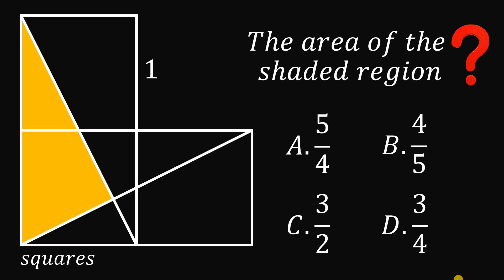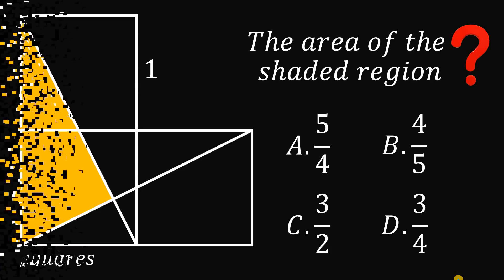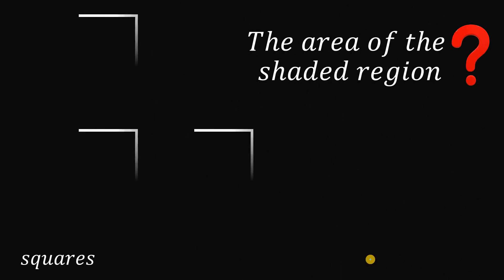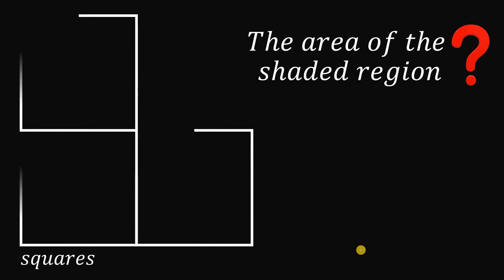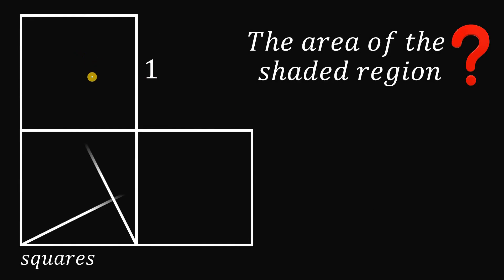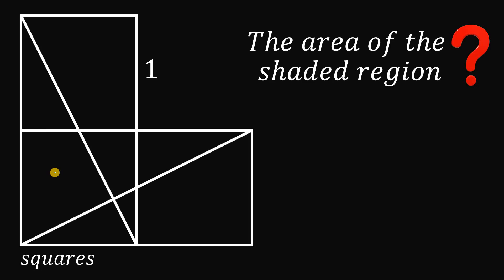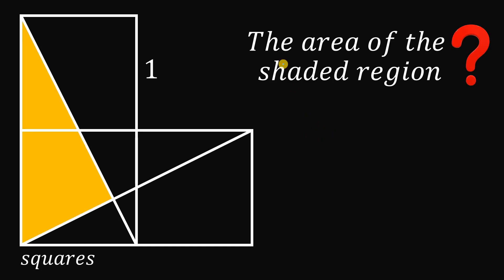Can you solve this geometry challenge? Given three squares with a side length of one unit, we draw two line segments and shade a triangle formed by them.